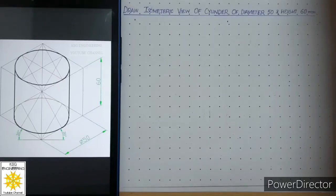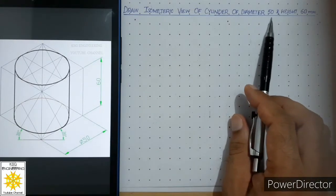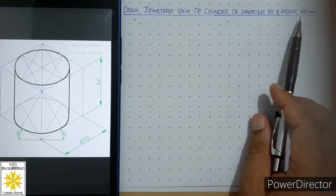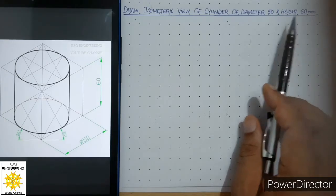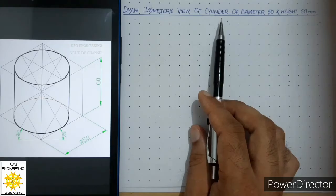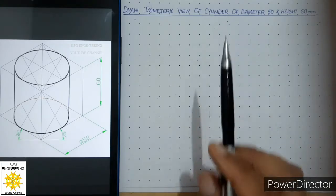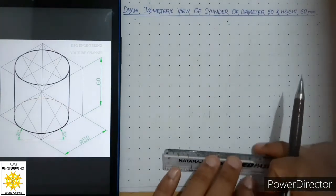Welcome students. Today we will draw the isometric view of a cylinder of diameter 50mm and height 60mm. Let us see the steps we require for the isometric view of a cylinder.